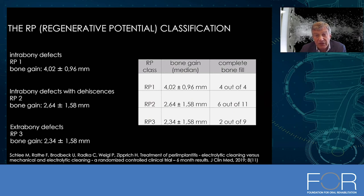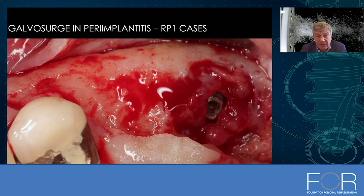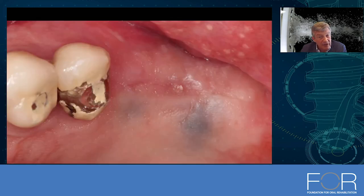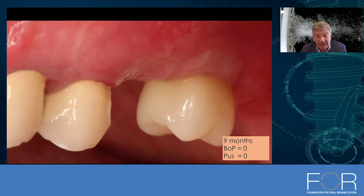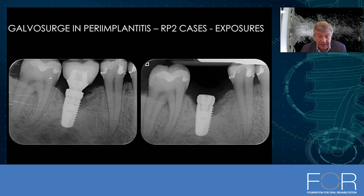Looking at long-term outcomes, in RP1 cases all cases achieved complete bone fill; in RP3 cases the outcomes were more variable. Here is an RP1 example — a wide, crater-like, cup-like defect. We performed augmentation, you can see the X-ray, suturing, and the healing situation. Sometimes a bone particle comes through, but this is not a real issue. Opening after six months shows bone up to the implant — this is after nine months from the buccal aspect, and after 25 months — a very typical result with this technique.